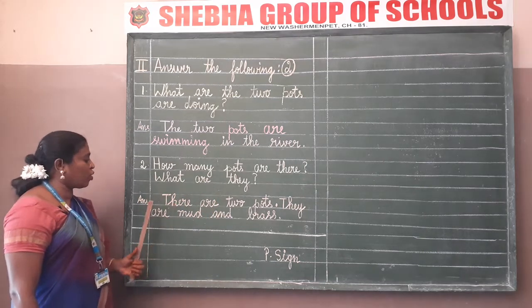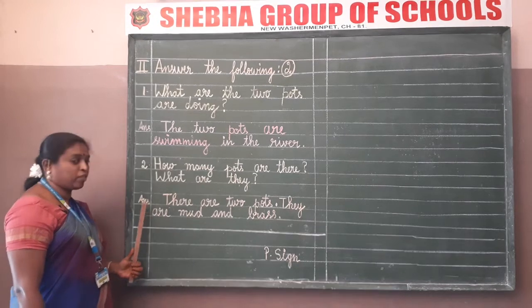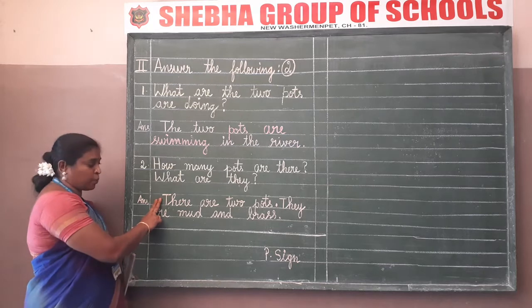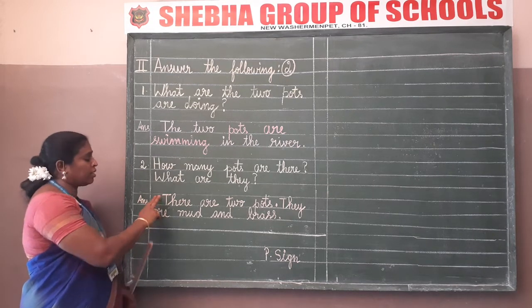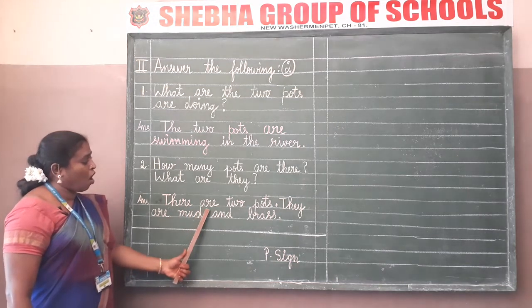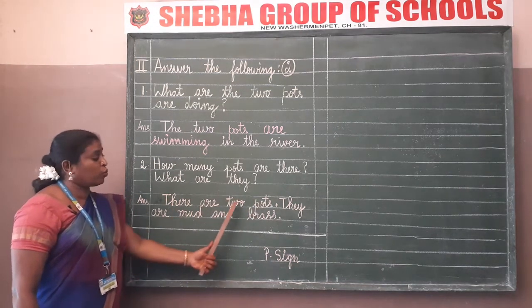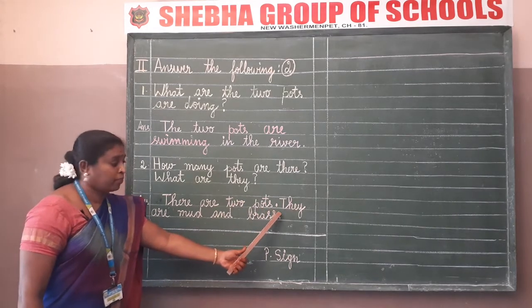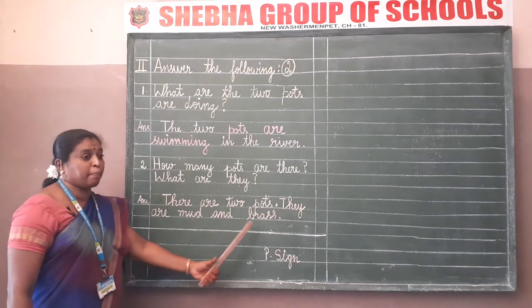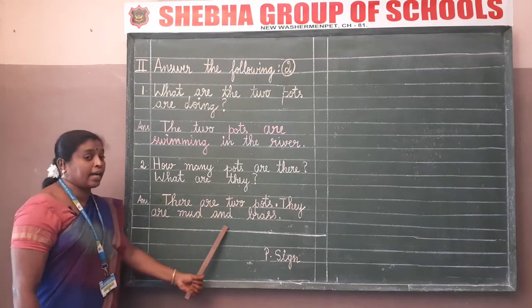Now we are going to write the answer. Leave this line and write starting from the next line. Answer: keep two finger space gap and write with a capital letter. 'There are two pots.' Full stop. 'They are mud and brass.'